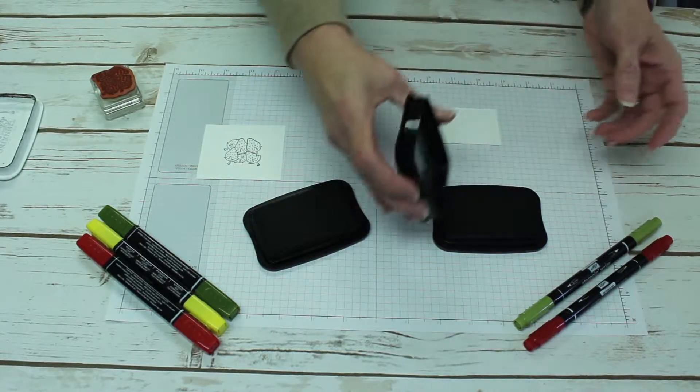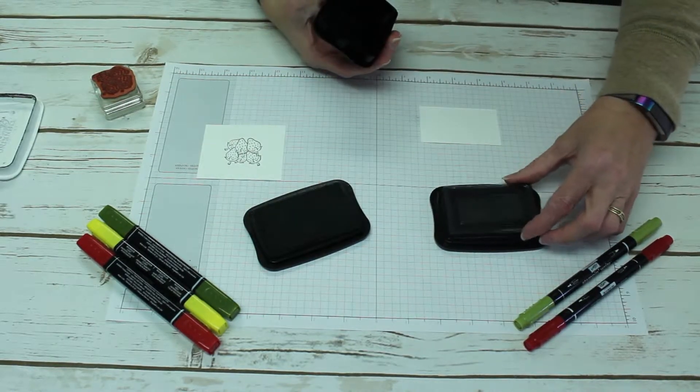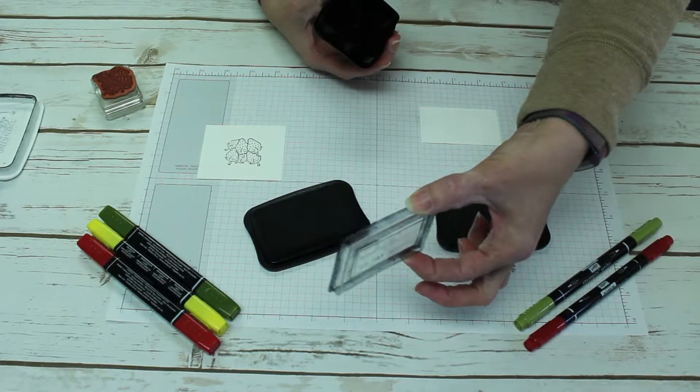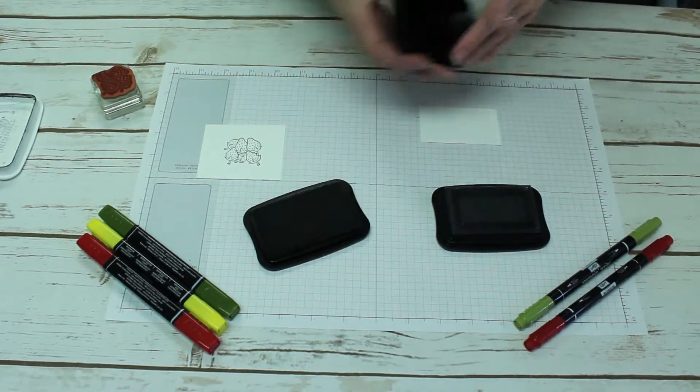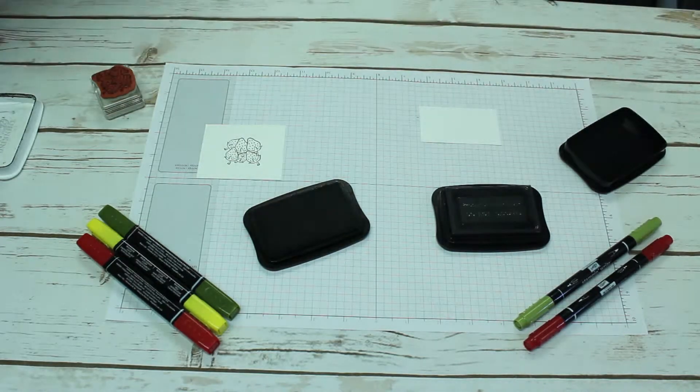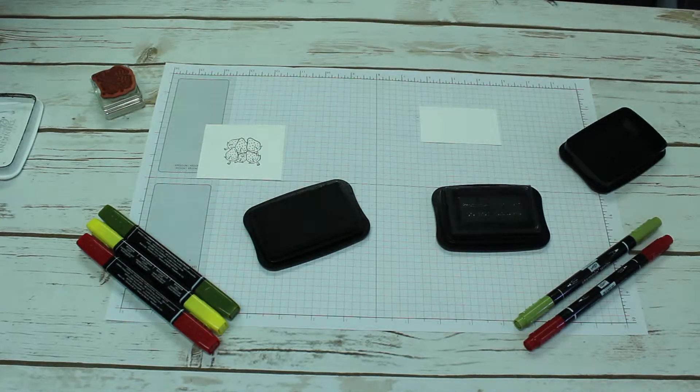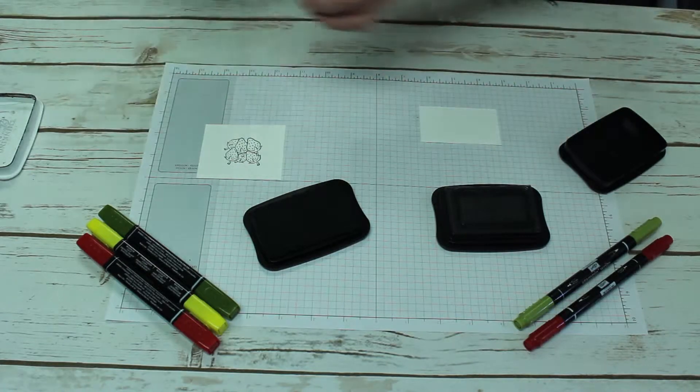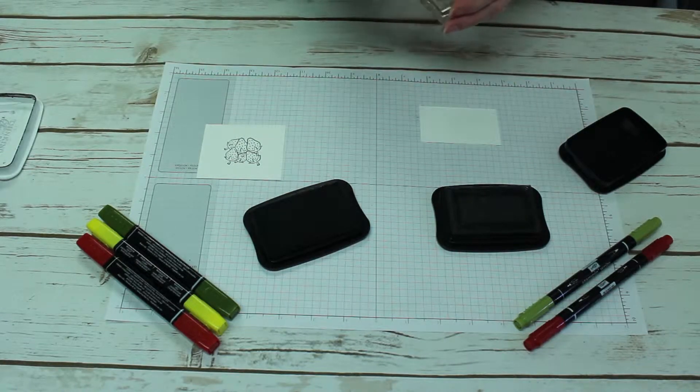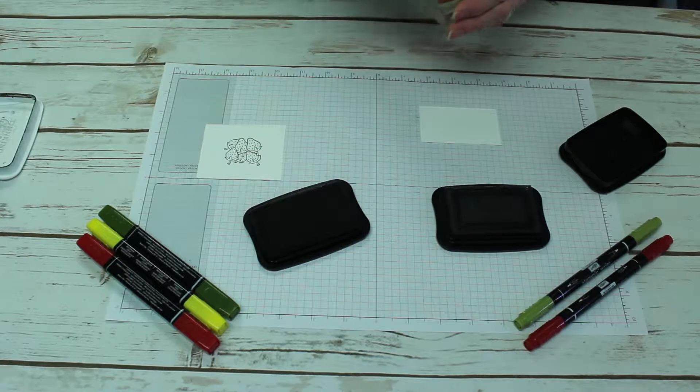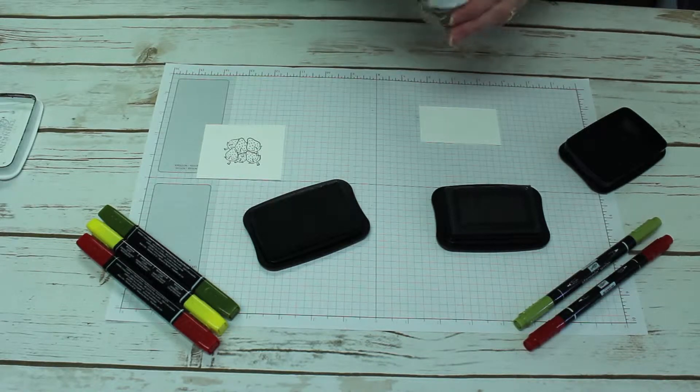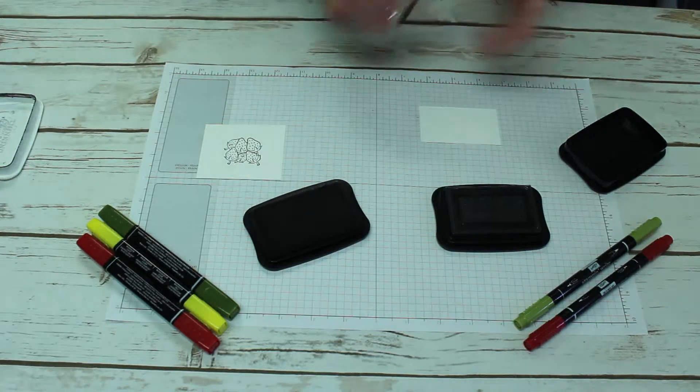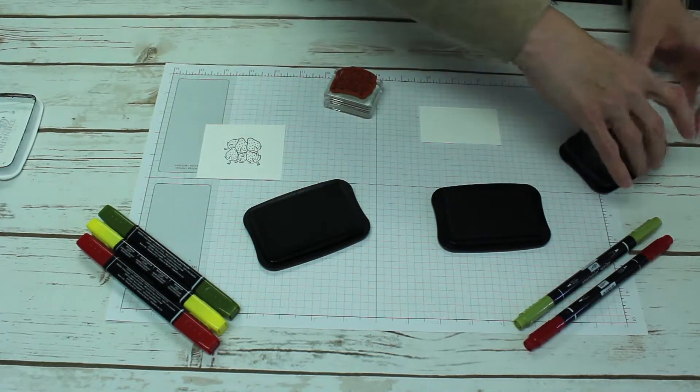Over here you have your StazOn, and you will notice your StazOn has this clear plastic cover. Do not throw this out! It's very important that you keep that on your ink because it's a solvent-based ink, it evaporates. If you do not use this, your ink will evaporate and when you go to use your ink pad, it will be dried out. That can be fixed because StazOn does sell refills for your ink, and so does Memento.